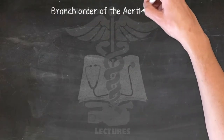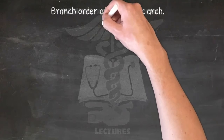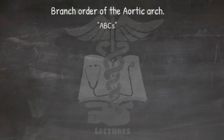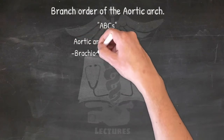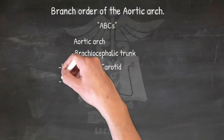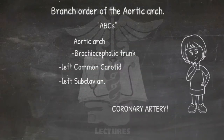For the major branch order of the aortic arch, this should be as easy as knowing your ABCs. The aortic arch gives rise to the brachiocephalic trunk, left common carotid, and left subclavian. Beware though of the trick question of what is the first branch of the aorta — technically, it's the coronary arteries.